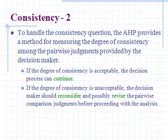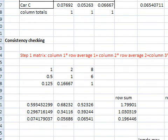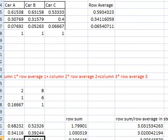Once I have this row average, I am going to multiply the first element of the row average with the initial pairwise matrix first column, the second element with the second column, and the third element, which is 0.064, with the third column. Then I am going to calculate the sum of this row and divide this row sum by the row average here. So 1.7990 divided by 0.59, then 1.00 divided by 0.34, and 0.196 divided by 0.0654.